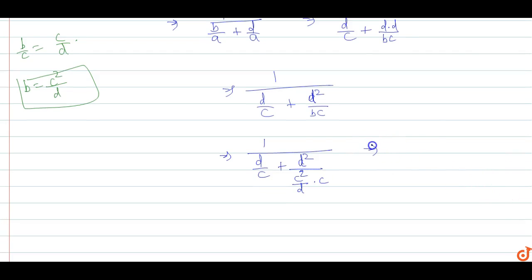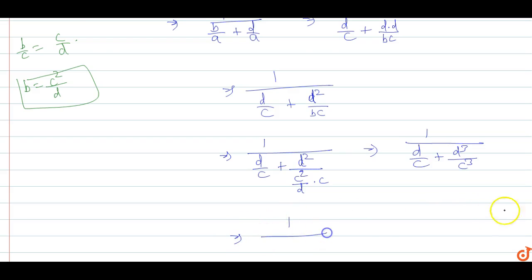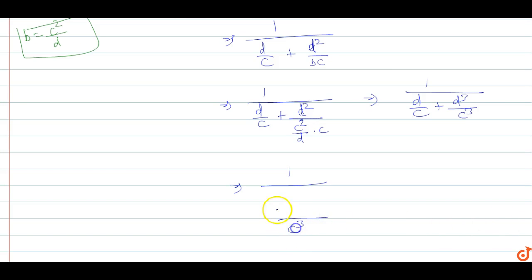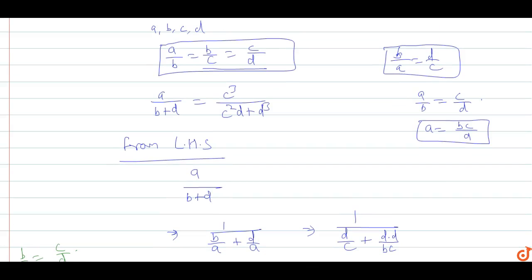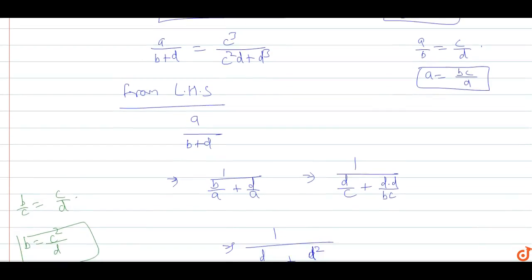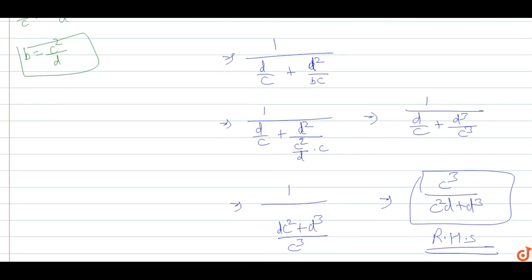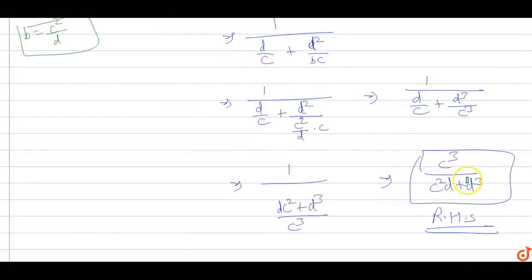This will become 1 upon D by C plus D cubed by C cubed. From here, taking 1 upon with common factor, this simplifies to C cubed by C squared D plus D cubed. This is our RHS. So we have taken LHS A by B plus D and proved it equals C cubed by C squared D plus D cubed, which is our RHS.